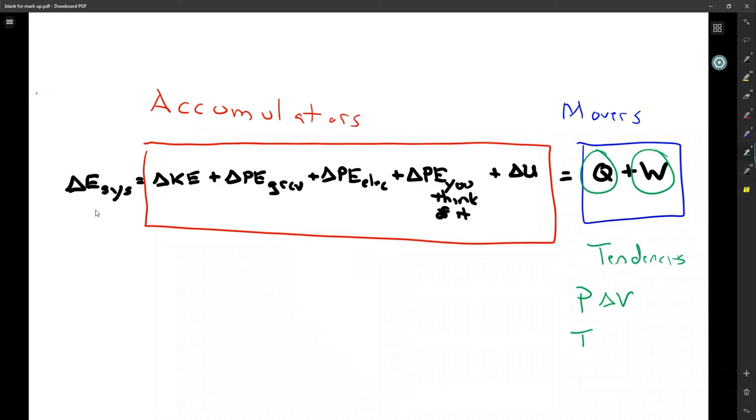Now, when thinking about these accumulators, movers, tendencies, a formal word, by the way, is conjugate variables for the tendencies. Conjugate variables.